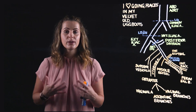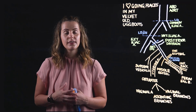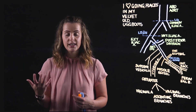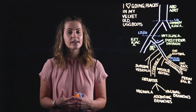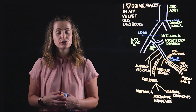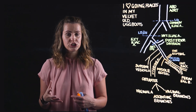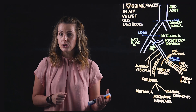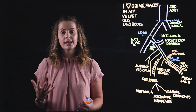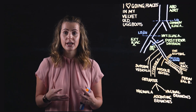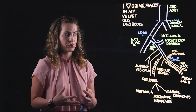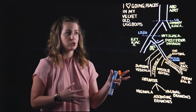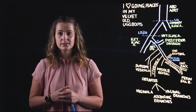Turning briefly to the posterior division of the internal iliac, this gives rise to three parietal branches: the iliolumbar artery, the lateral sacral artery, and the superior gluteal artery. These will not be drawn on in the interest of space.